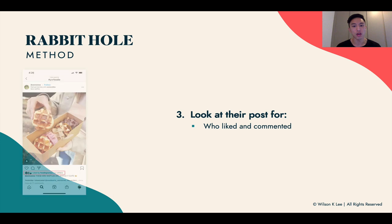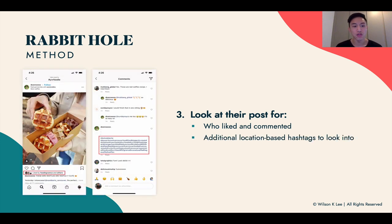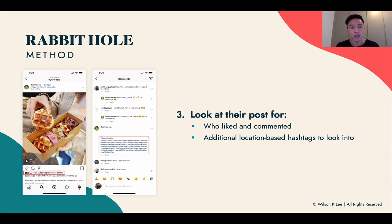Next, look at their posts and who liked and commented on them. When you click into a post, you'll see the people who liked it — the majority are either followers or other foodies. That's an area where you can find additional foodies. At the same time, look for additional hashtags you can click into to explore other types of influencers. Their hashtag groups are usually in the description or as their first comment. We cover this more in module six of the Foodiepreneur's Finest program.